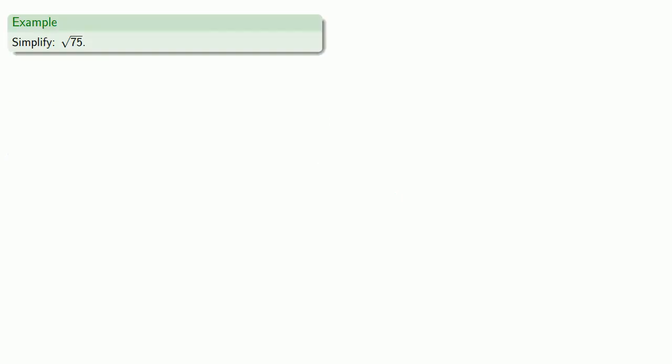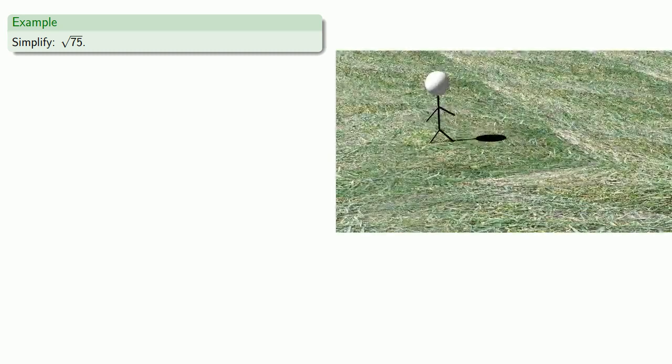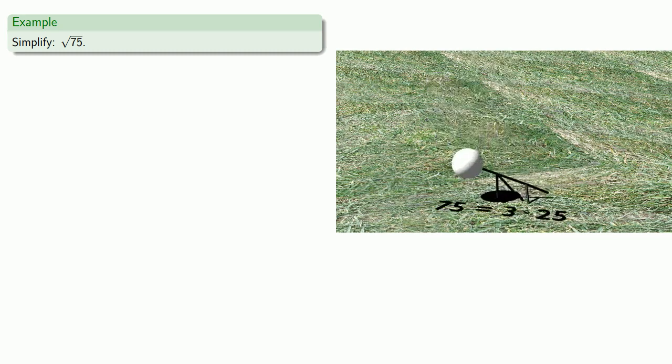For example, suppose we want to simplify square root of 75. Now suppose you're walking along one day and all of a sudden, out of the sky, the fact that 75 is equal to 3 times 25 falls and hits you on the head.